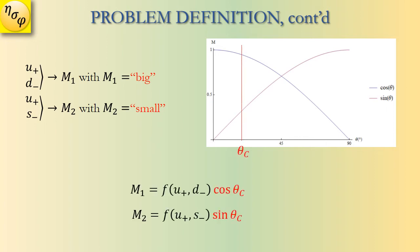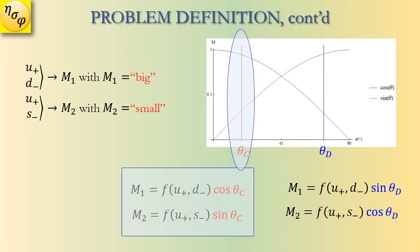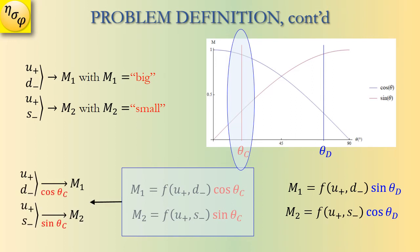We can select a small angle theta-c or a big angle theta-d. Selecting the small angle theta-c, it is seen that cosine(theta-c) is rather big while sine(theta-c) is rather small. Subsequently we can make a symbol as shown on the screen.